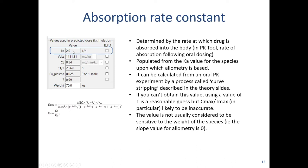Starting at the top: the absorption rate constant is the rate at which the drug is absorbed into the body. For oral dosing, it's populated from the ka value for the species upon which the allometry is based. So if you've done some mouse PK and you're using that as your allometry, and you've got a ka value from the mouse PK, then that's the value that will be used — because in the allometry it's assumed that ka is the same between different species.